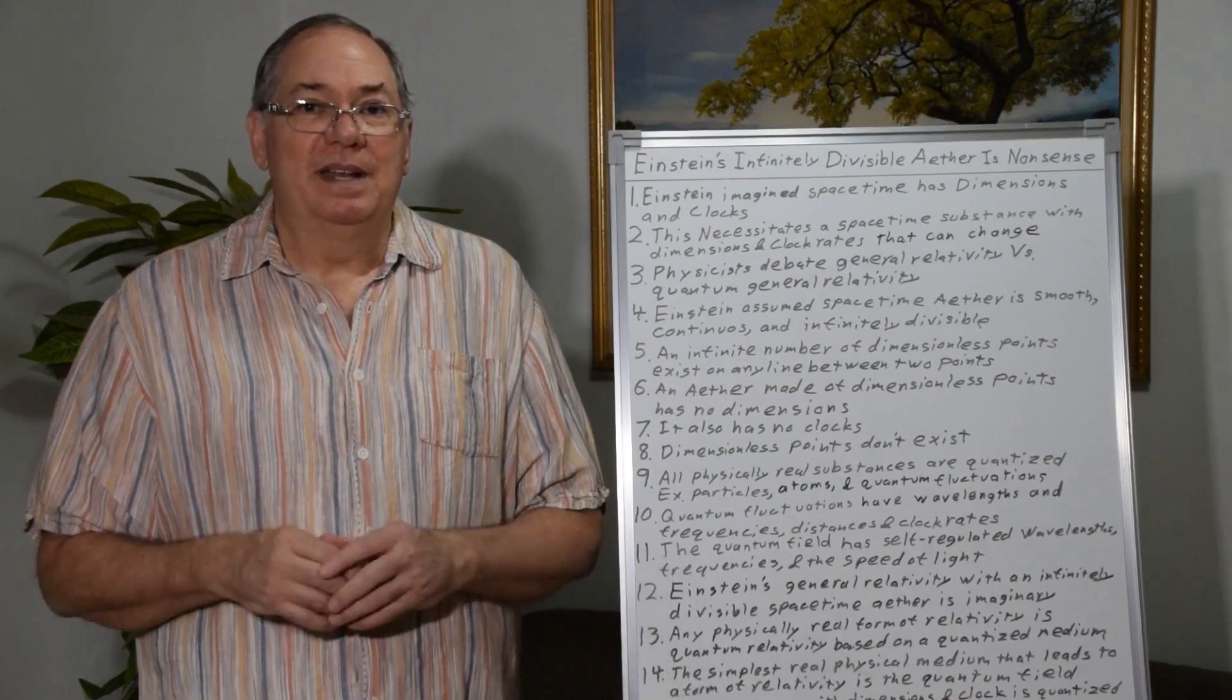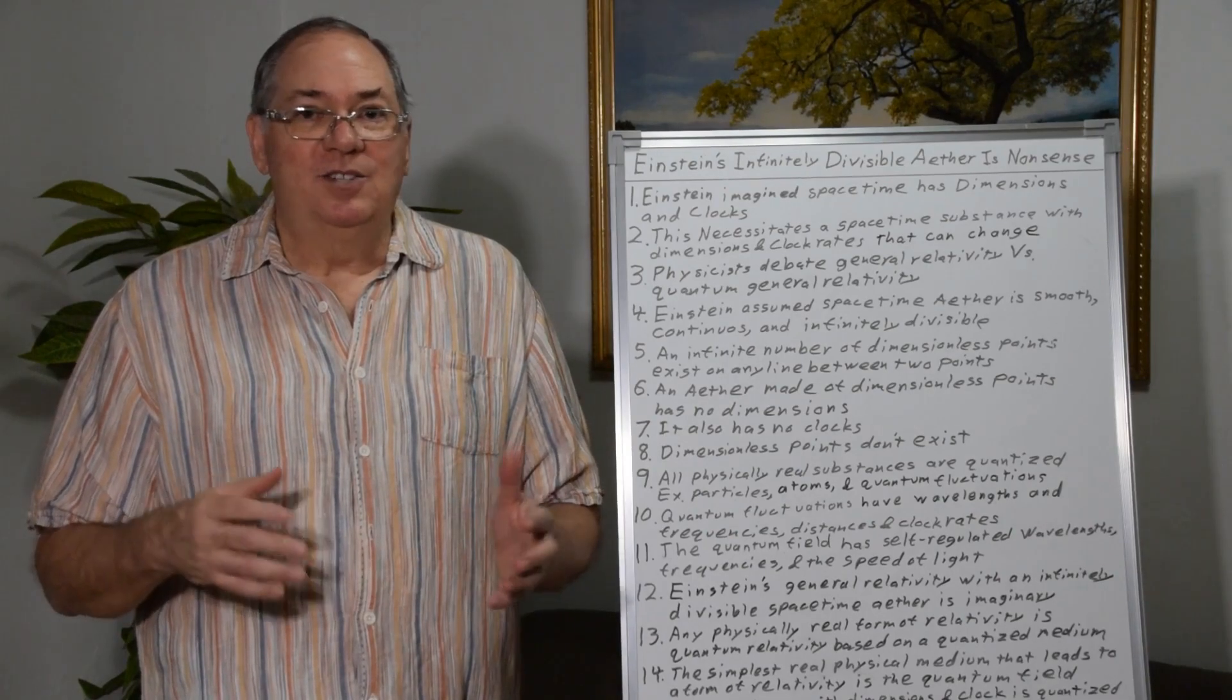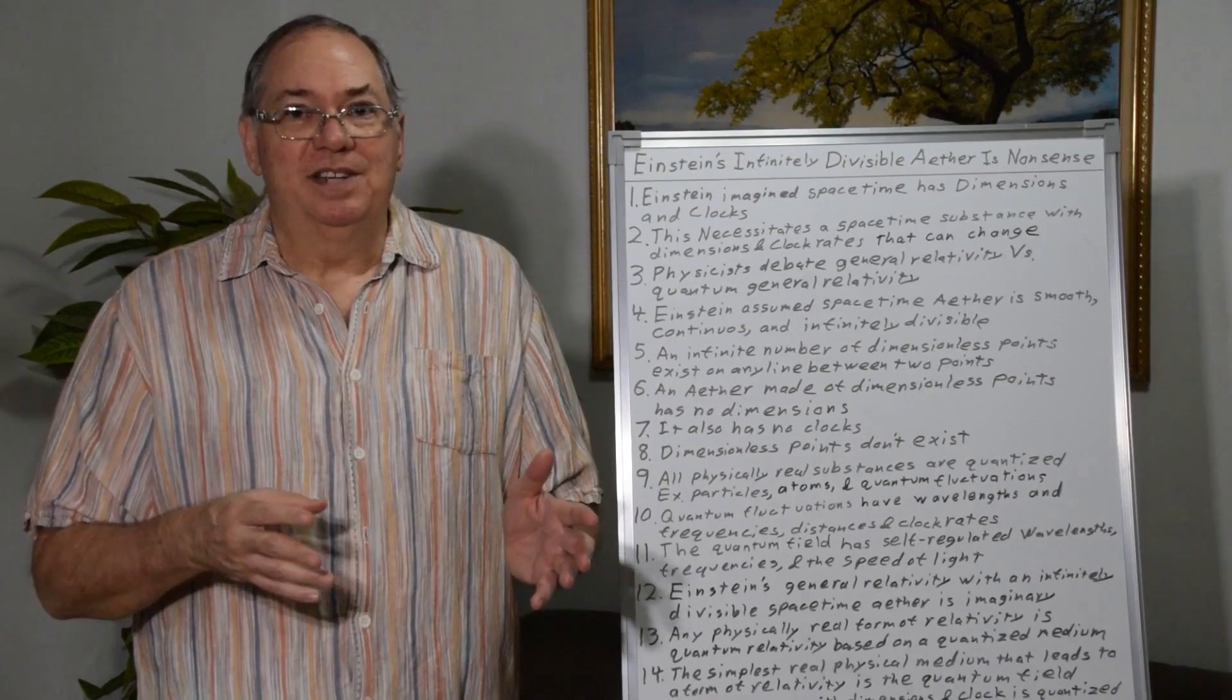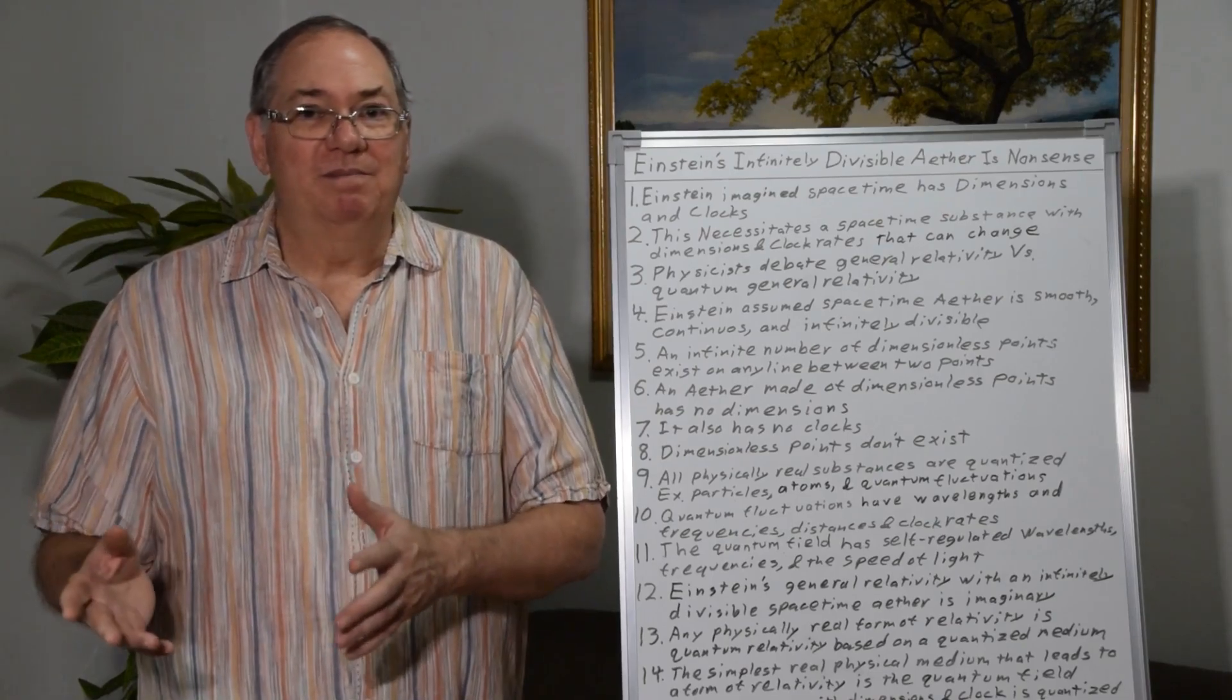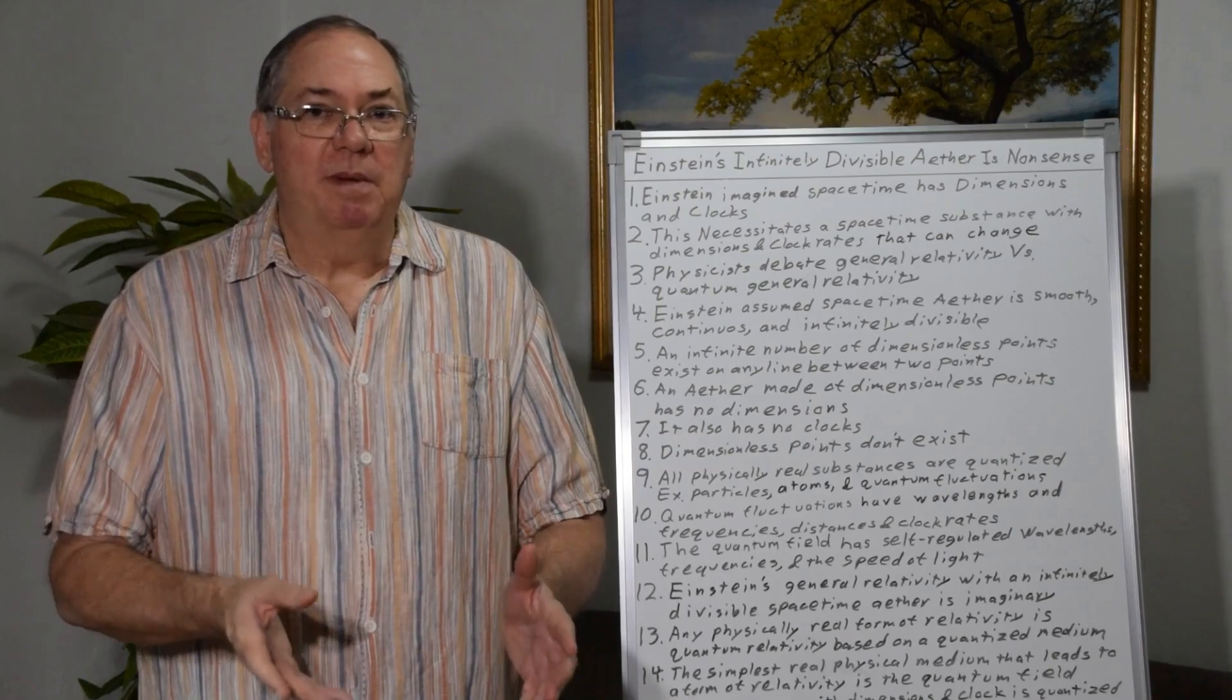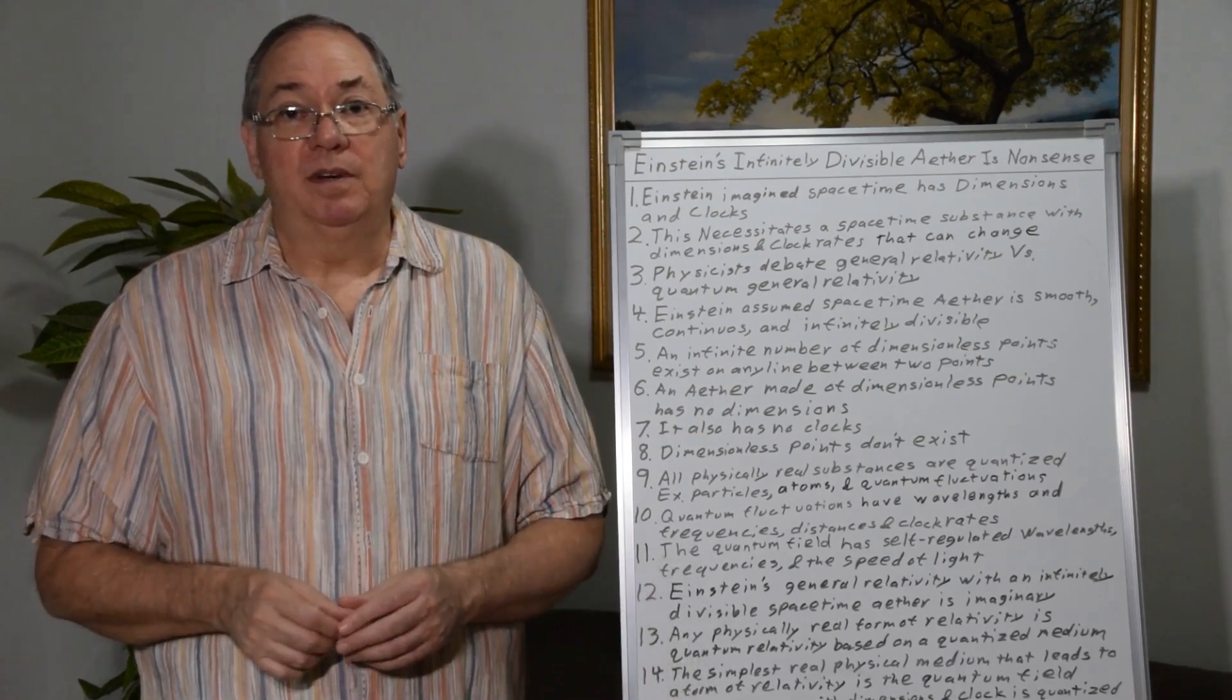So this is something I've been giving some thought to, that there shouldn't even be a question of whether there's Einstein's general relativity versus quantum general relativity. It's always been, it has to be quantum general relativity but we have to start with the basics. We have to understand where the distances and time emerge from.